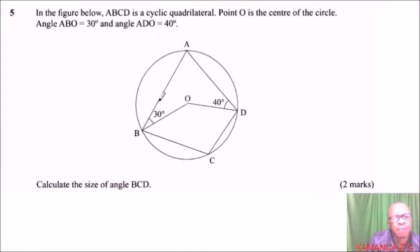Question number 5. We are told, in the figure below, ABCD is a cyclic quadrilateral. A cyclic quadrilateral is a four-sided figure that touches, that is, whose vertices touches the circumference of the circle. As you can see, A touches the circumference. B touches the circumference. C and D. Okay. Point O is the center of the circle. We have it there.